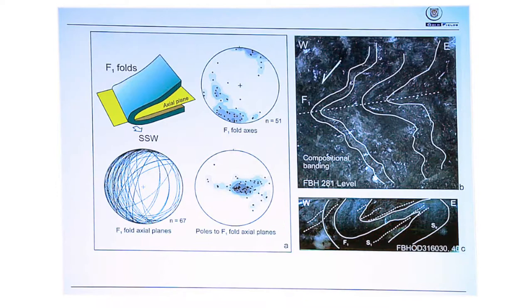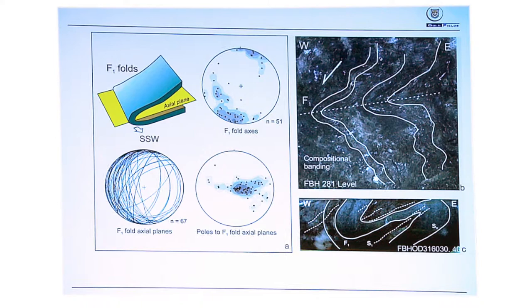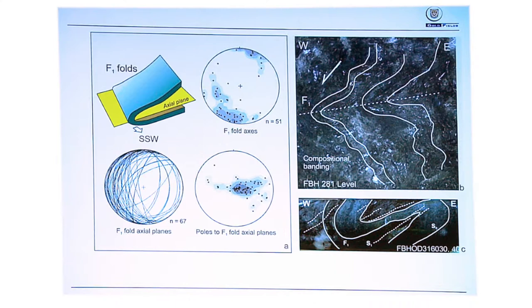Along the western side, especially with the S1 foliation and early compositional banding, you see recumbent folds on all scales—they can be 30 to 40 metres wide, and we've mapped them down to smaller scale. They're all dipping gently to moderately out to the west, giving you a west-side-down movement sense. They're drag folds—the whole sequence is sliding down, very ductile, like toffee, almost like soft sediment deformation. To separate F1 from F2 folds, you can't use fold axes since they're all parallel; use the fold axial planes instead, as the attitude of F1 folds is markedly different to upright F2 folds.